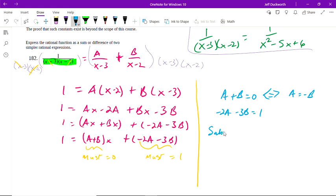so substitute negative B in for A in the second equation down here, we get negative 2 times negative B, because that's A, minus 3B equals 1. Well, then I have a positive 2B and a negative 3B. That means negative B equals 1 or B equals negative 1. And if B equals negative 1, that means that A must equal 1, because they add up to 0.